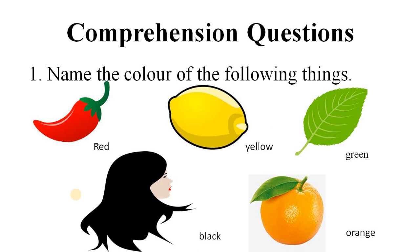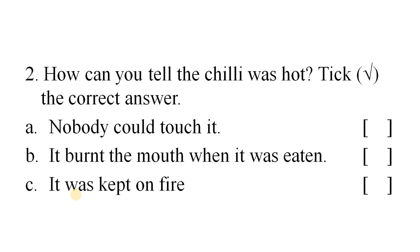Next question. How can you tell the chili was hot? Tick the correct answer. Option A: Nobody could touch it. Option B: It burnt the mouth when it was eaten. Option C: It was kept on fire. The correct answer is: It burnt the mouth when it was eaten.